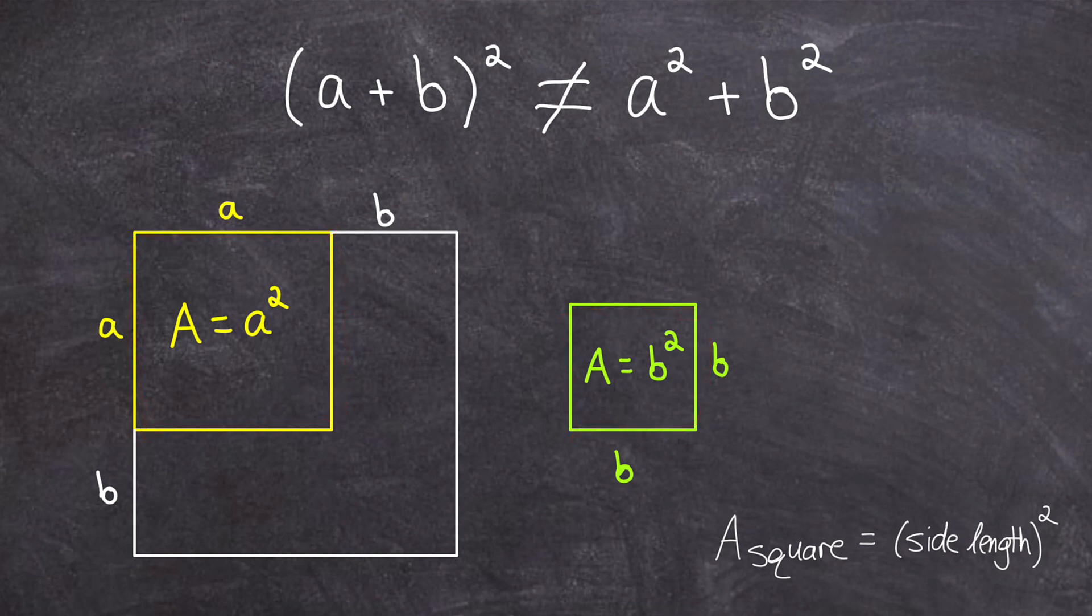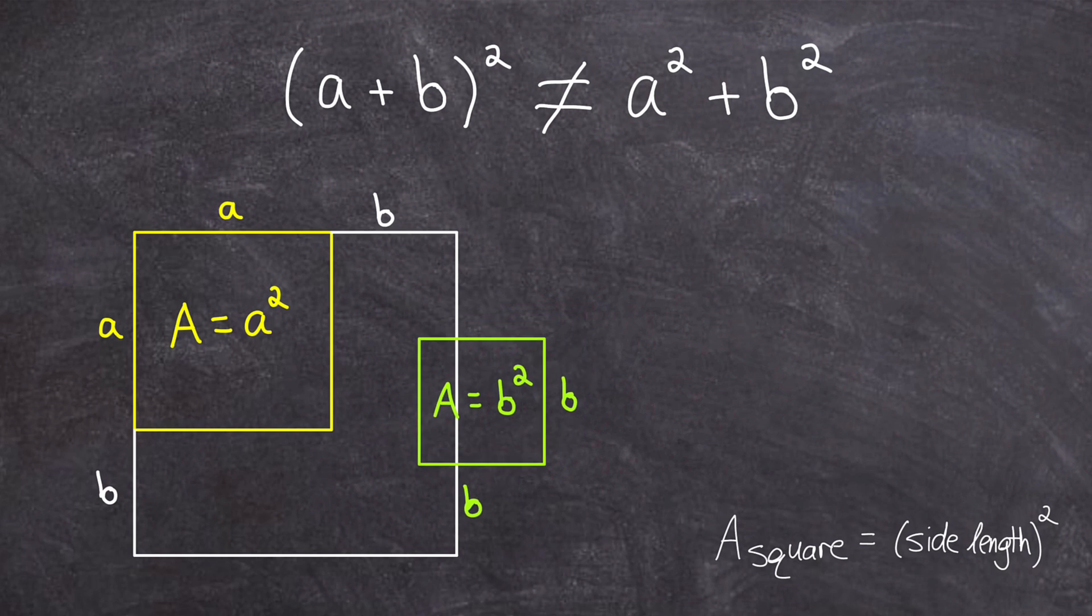So geometrically, this green square's area should fill all of this area here exactly, which obviously it doesn't. You can see when I take this square and move it inside of the bigger square, it doesn't fill all of the area at all.